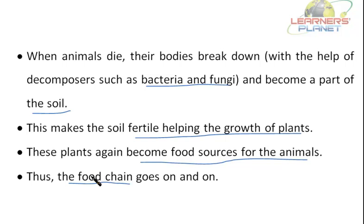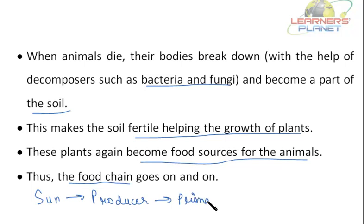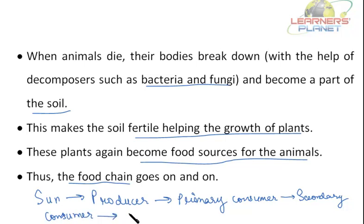Food chains are simple representations of energy flow in nature, and they exist everywhere — be it in the pond or the ocean, the grassland, the mountain or desert. Remember the order: first comes the sun, then comes the producer, after that comes the primary consumer, then the secondary consumer, then the tertiary consumer, and lastly decomposers such as bacteria and fungi.